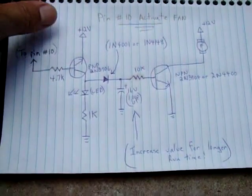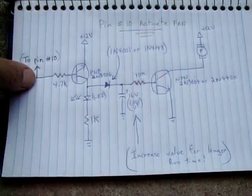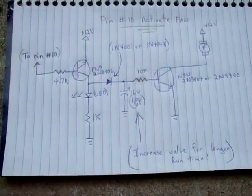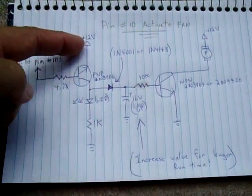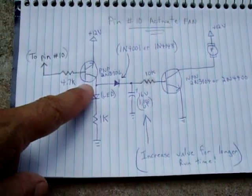The circuit's going to work like this. You remove the LED from pin number 10 and replace it with a PNP transistor.